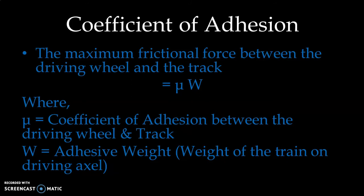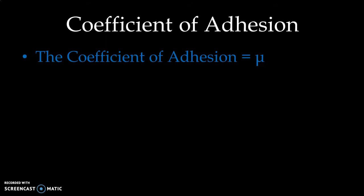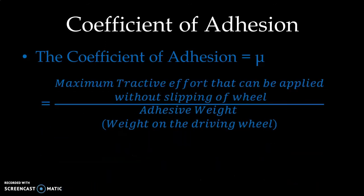If the tractive effort force is greater than the product mu × W, then there will be a slip. The coefficient of adhesion mu can be defined as the ratio of the maximum tractive effort that can be applied without slipping of the wheel to the adhesive weight, which is the weight on the driving wheel. The total tractive effort to be generated depends on the total adhesive weight and the coefficient of adhesion.